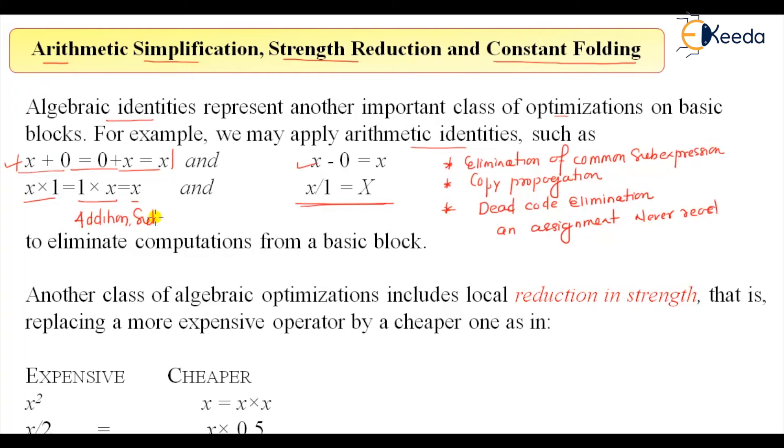subtraction, multiplication, division. Because we know the identities and I know that I'll get the same value, we can eliminate all this computation from the basic block. So that is arithmetic simplification, and arithmetic simplification in this case uses algebraic identities. Another optimization of algebraic optimization is the reduction in strength.